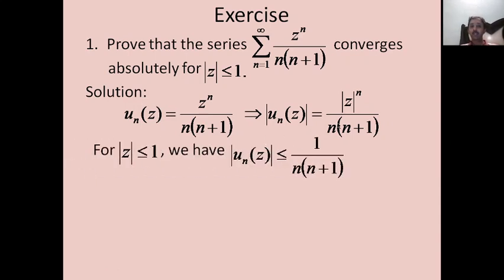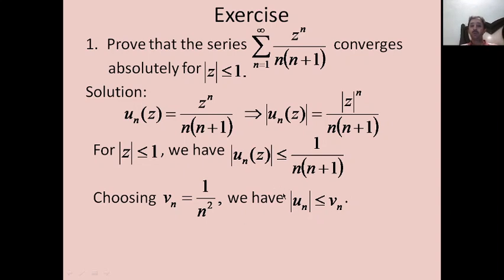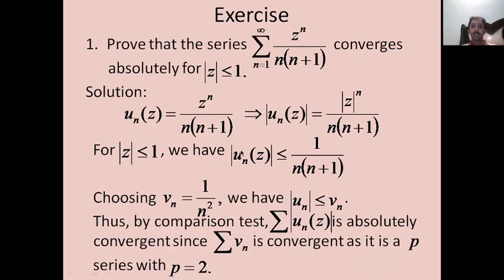For |z| ≤ 1, |u_n(z)| ≤ 1 / [n(n+1)]. This can be compared to the p-series sigma 1/n², so choosing v_n = 1/n², we see |u_n| ≤ v_n. Since sigma v_n = sigma 1/n² is convergent (p = 2), by the first comparison test the given series is also absolutely convergent for |z| ≤ 1. Whenever discussing the nature of a series of complex functions, we use either the comparison test or D'Alembert's ratio test.